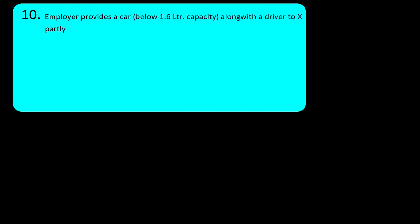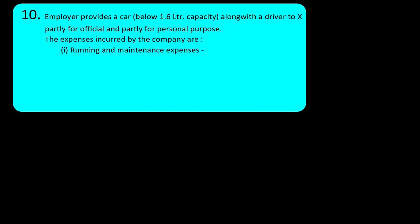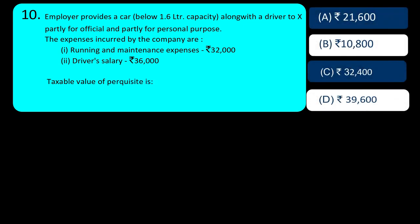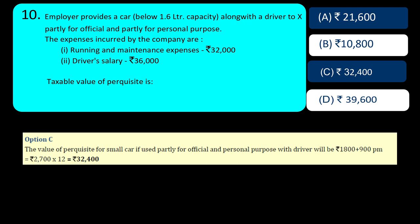Question 10: Employer provides a car below 1.6 liter capacity along with a driver, used partly for official and partly for personal purposes. For a small car (1.6 liter CC or less) provided by the employer for both purposes, the fixed taxable amount is Rs. 1,800 per month. Since a driver is also provided, add Rs. 900 per month — totaling Rs. 2,700 per month into 12 = Rs. 32,400. The answer is option C.